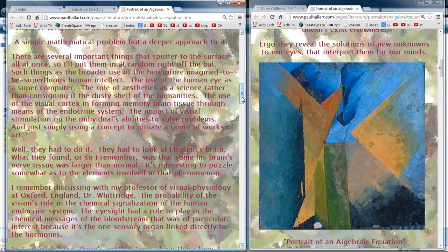This is still in the experimental stage, but if it works out — and I've had a chance to test the theory — you will be able to learn your subjects. You'll be able to do the equivalent of a master's degree in one and a half years, a bachelor's degree in a couple of months. The impact of visual stimulation on the individual's ability to solve problems, and simply using a concept to initiate a genre of works of art.